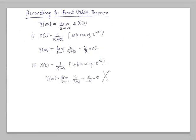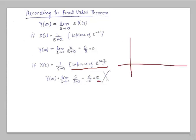But something strange happens with the rising exponential. The Laplace transform of e raised to power at is 1 upon s minus a. Applying the final value theorem, limit s approaches 0 of s upon s minus a gives 0. But we know that for a rising exponential the final value is not 0 — in fact it is infinity. So the final value theorem is not holding true here; we get an incorrect result. Why does that happen?